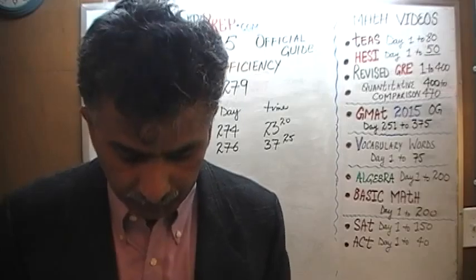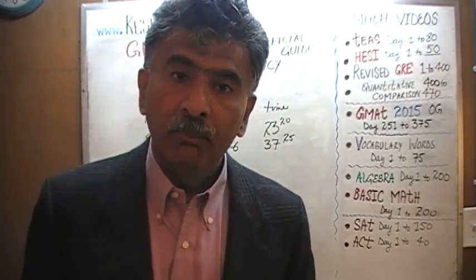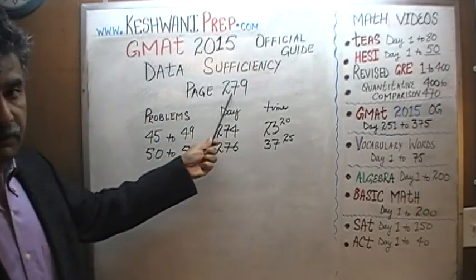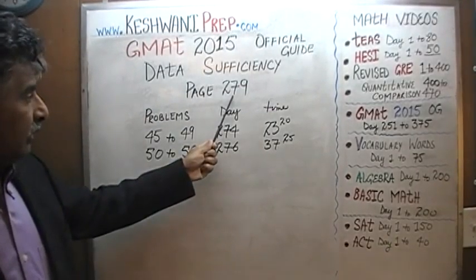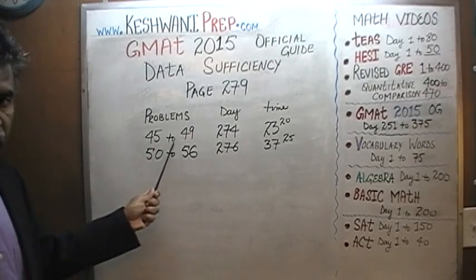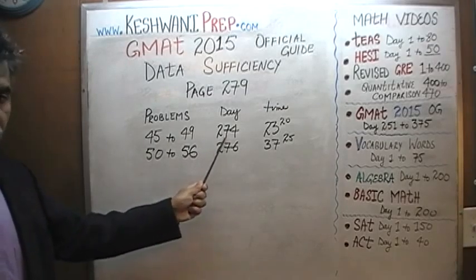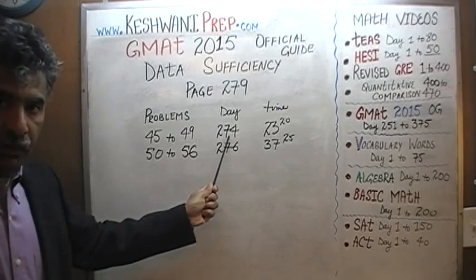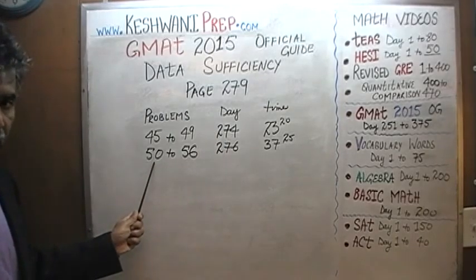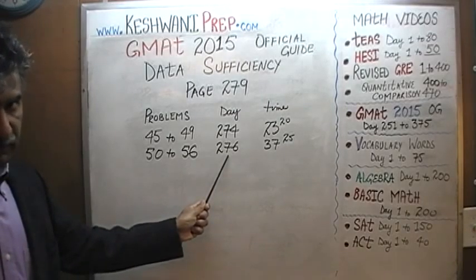I'm going to simply tell you where you'll be able to find the solution to a given problem. Today we'll look at all the data sufficiency problems appearing on page number 279. On page 279, you will find problems 45, 46, 47, 48, and 49. Solutions to problems 45 through 49 are on day number 274, and solutions to problems 50 through 56 are presented on day number 276.